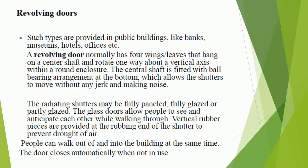The central shaft is fitted with a ball bearing arrangement at the bottom, which allows the shutters to move without any jerk or noise. The radiating shutters may be fully paneled, fully glazed, or partly glazed. Glass doors allow people to see and anticipate each other while walking through. Vertical rubber pieces are provided at the rubbing end of the shutter to prevent drafts of air.